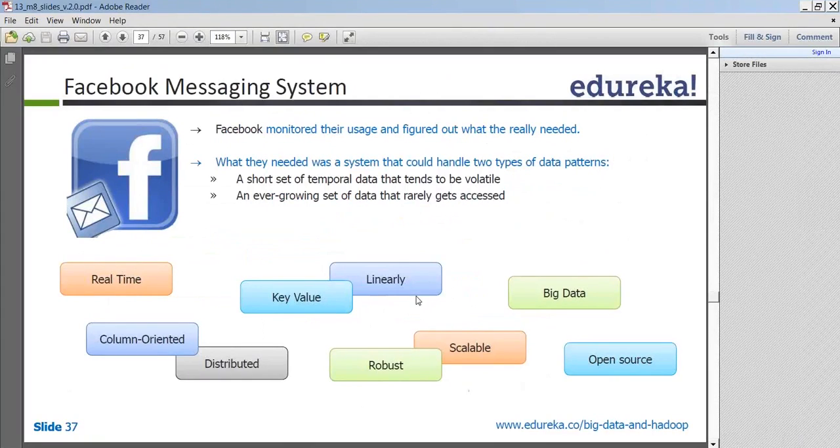So HBase as a database has been used by a lot of different vendors, a lot of companies. So a lot of companies, they have moved from traditional RDBMS to a NoSQL database. So guys, can anybody tell me, when do you think that you can move from a relational RDBMS to a NoSQL database?